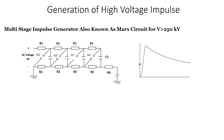In this lesson we discuss how to generate high voltage impulse using a circuit called the Marx circuit, or multi-stage impulse generator. This is used to generate a voltage of greater than 250 kilovolts. The Marx circuit is used to generate a very high impulse waveform, as seen in the circuit diagram.